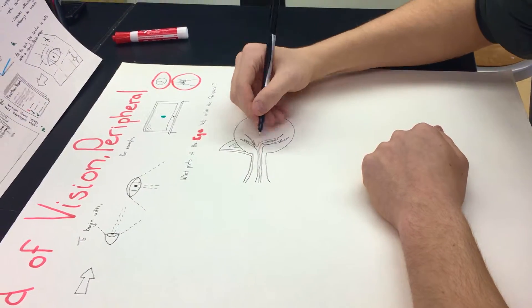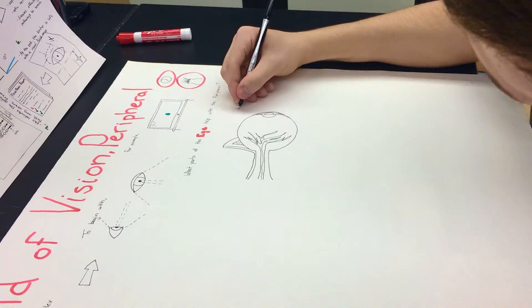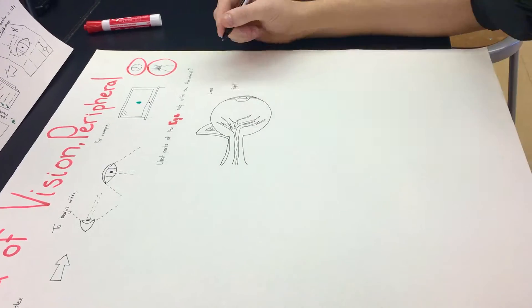The eye is a very complex organ in the body, and all the parts of it help you to be able to see the way you do.